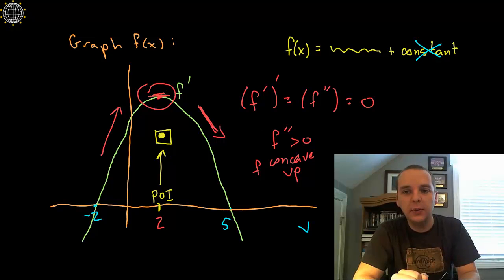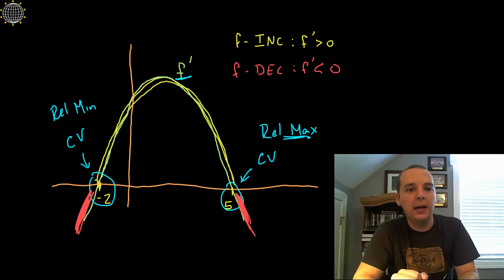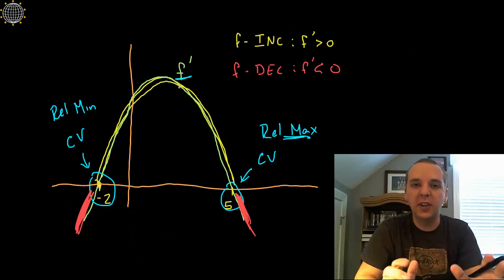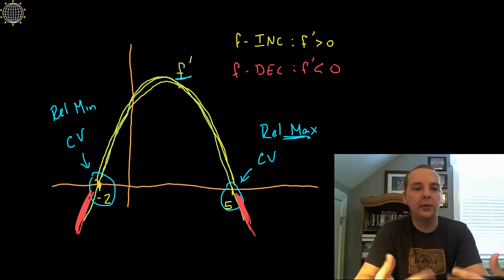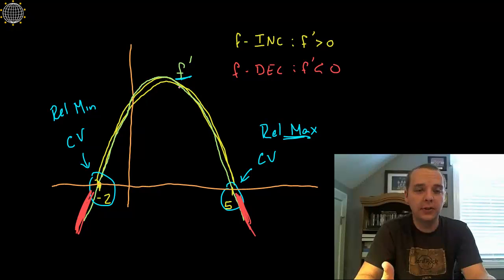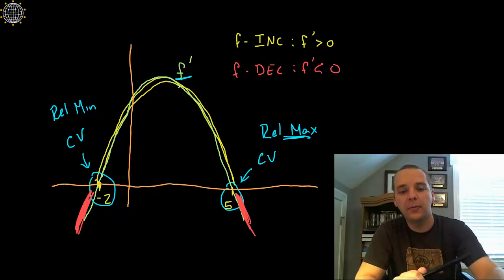Hopefully that reveals and explains how you can read or reveal things about the original function based off of the graph of f prime.